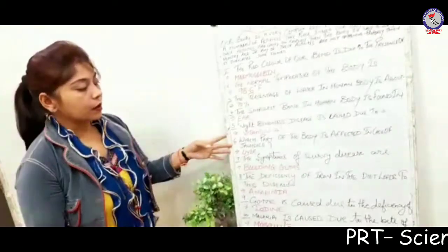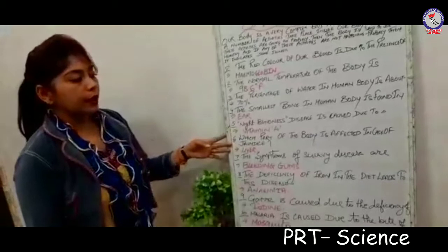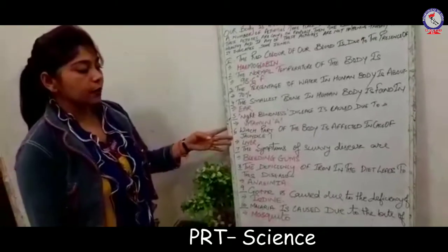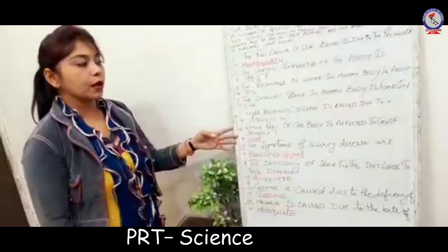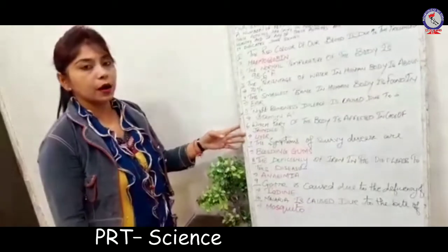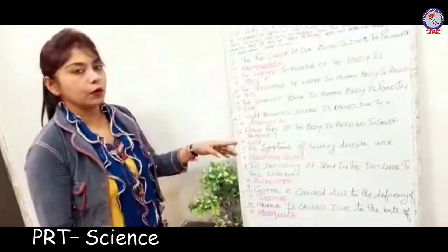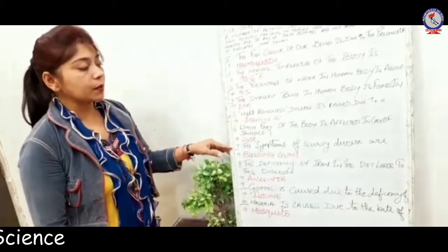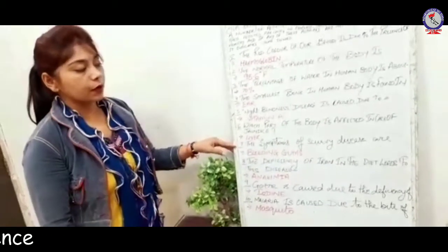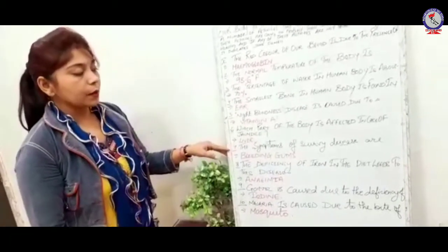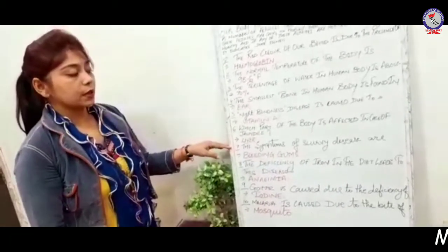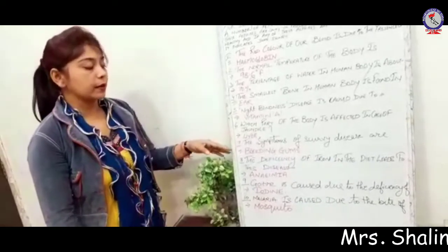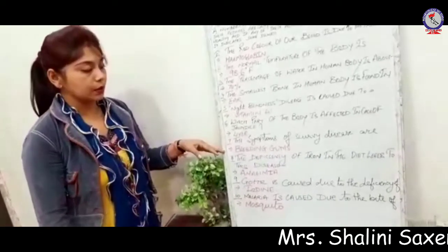Sixth one: which part of the body is affected in case of jaundice? जब jaundice हो जाता है तो हमारी body का liver affect होता है. Seventh one: the symptoms of scurvy disease are bleeding gums.